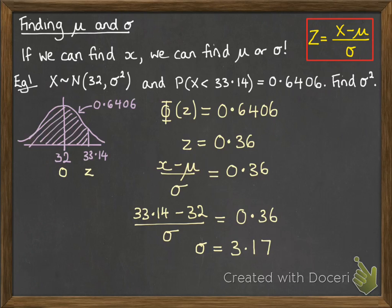So rearranging that gives us sigma equals 3.17, and of course we were asked for sigma squared, so that's 10.03.